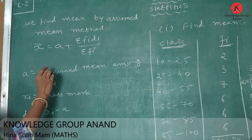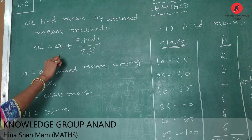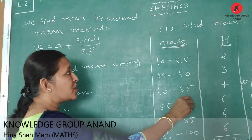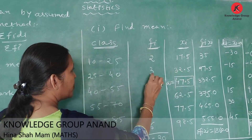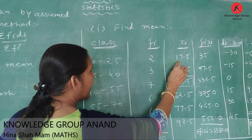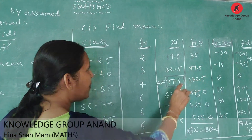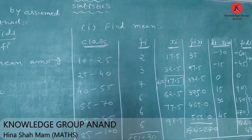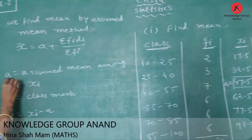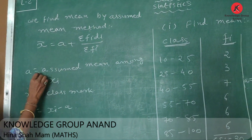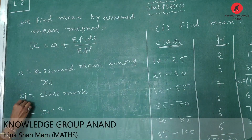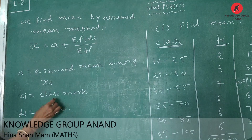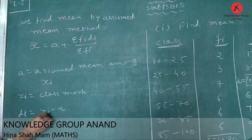Where is this method used? This method is used when our calculations are very large. For example, xi values like 17.5, 32.5 are large numbers and fi·xi becomes complicated. Therefore, we use di to make our calculation easier. Here, A is an assumed value chosen from among the xi values, and di is equal to xi minus A.